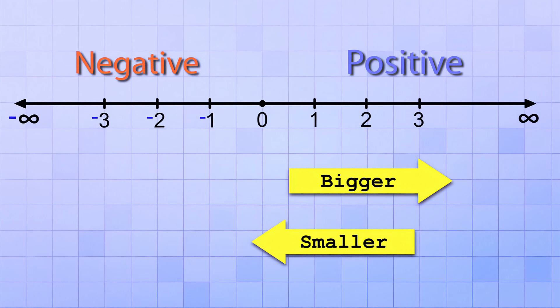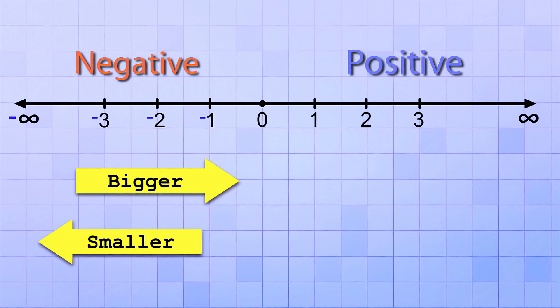Well, those same exact rules apply to the negative side of the number line also. The numbers get bigger as you go to the right, and they get smaller as you go to the left. So, since negative 3 is on the left side of negative 2, it's actually smaller than negative 2.